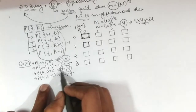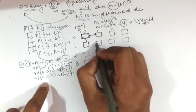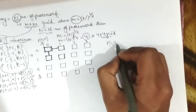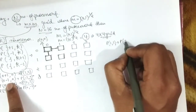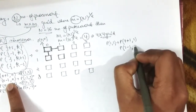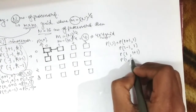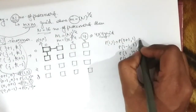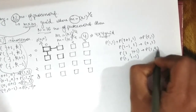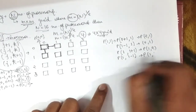Now considering processor p(1,1), applying the same formulas: p(1,1) connects to p(2,1), p(0,1), p(1,2), and p(1,0). All four of these neighbors are valid positions within the 4×4 grid.